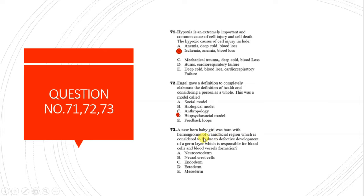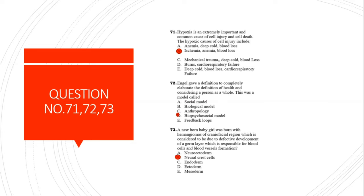Question 73: A newborn baby girl with a hemangioma of the craniofacial region, considered due to defective development of which germ layer responsible for blood cells and blood vessel formation? Most students will think of ectoderm, mesoderm, or endoderm, but the craniofacial and blood vessel formation is also assisted by neural crest cells, which are considered the fourth germ layer of the human body.